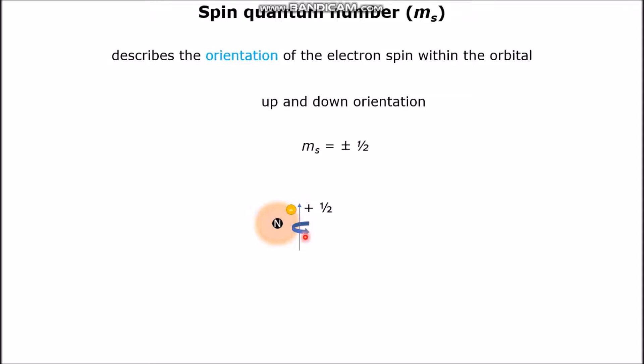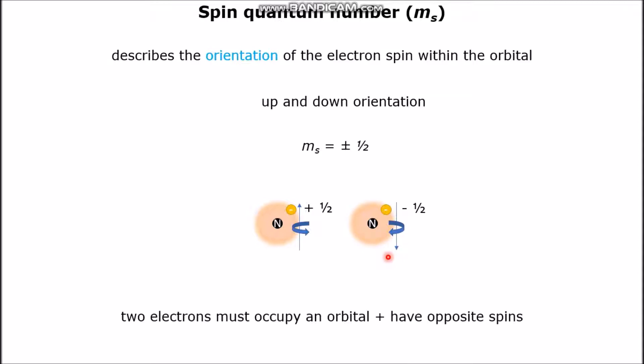As demonstrated here, an electron can have an up spin, clockwise, or a down spin, counterclockwise. Only 2 electrons can be contained within an orbital. There can be 0, 1, or 2 electrons — never more than 2 electrons in an orbital.